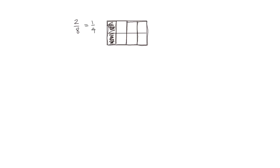And one of these larger units is shaded, so we can see that that's equal to one fourth. Let's see how we can show that in a division problem. We started with two eighths, then we divided by two to get fourths as the total number of units. So we went from two eighths to one fourth by dividing, and we see from the area model that both two eighths and one fourth are equivalent fractions.